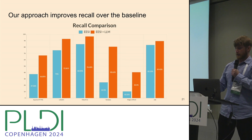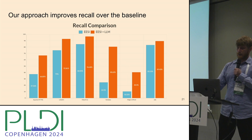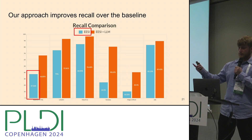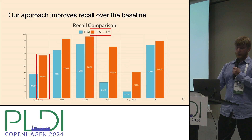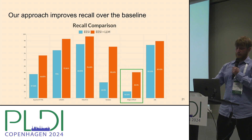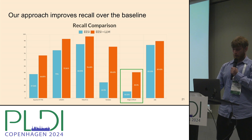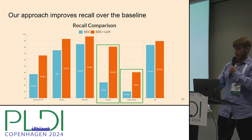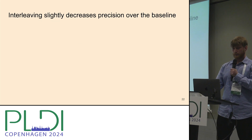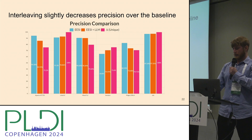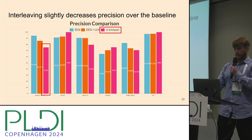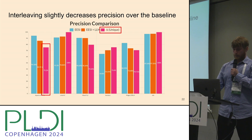Our approach improves recall over the baseline. The left bar is EasY and the right is our interleaved approach. With Pidgin having the highest third-party function percentage, we see quite a decent increase there. We also see an increase in net data, which has a lower third-party percentage but still a good mix. We do see a slight decrease in precision, where the pink bar on the right shows the delta — the uniquely learned error specifications from our approach over the static analyzer.